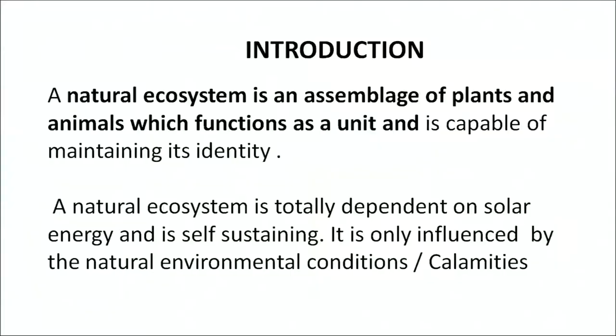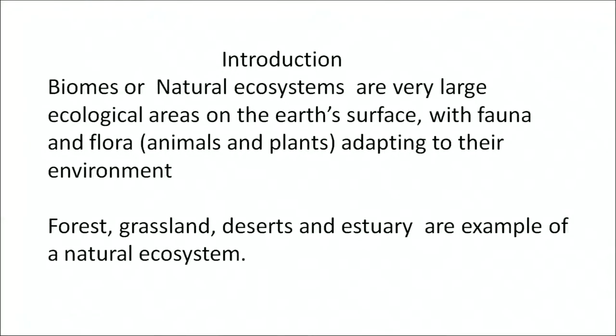Today I am going to discuss with you about natural ecosystems. A natural ecosystem is an assemblage of plants and animals which function as a unit and is capable of maintaining its identity. A natural ecosystem is totally dependent on solar energy and is self-sustaining. It is only influenced by natural environmental conditions or calamities. Biomes, or natural ecosystems, are very large ecological areas on the earth's surface with fauna and flora — animals and plants — adapted to that environment. Forests, grasslands, deserts and aquatic systems are examples of natural ecosystems.